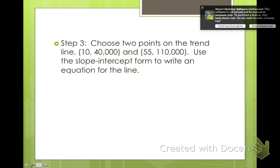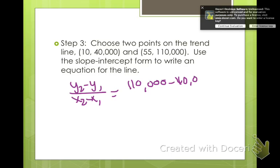We're going to take those points and then make an estimate of what our slope should be. We're going to choose two of those points that we went through. I went through (10, 40000) and (55, 110000). So we're going to make the slope. Remember our equation for slope is y2 minus y1 over x2 minus x1. So, 110,000 minus 40,000 over 55 minus 10.